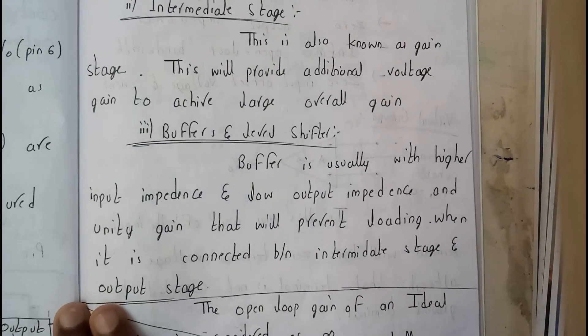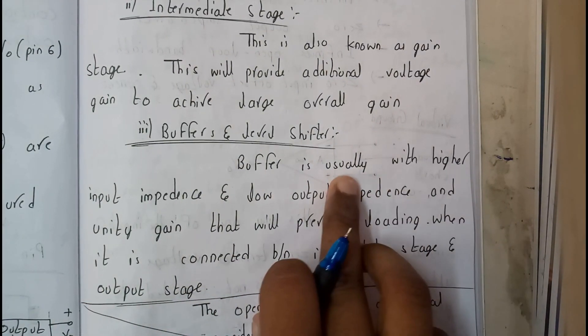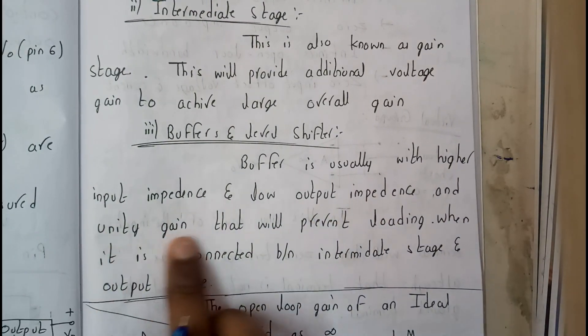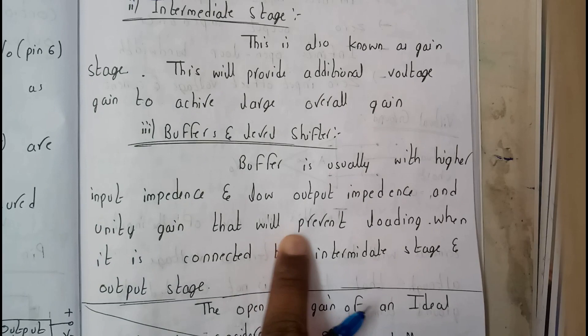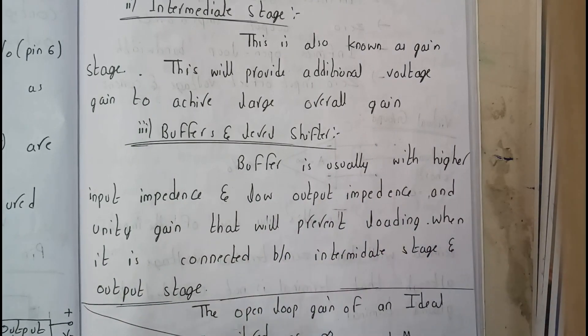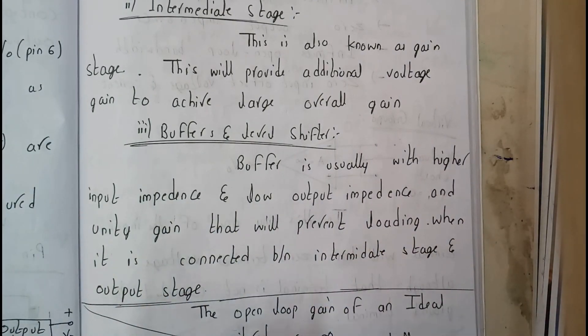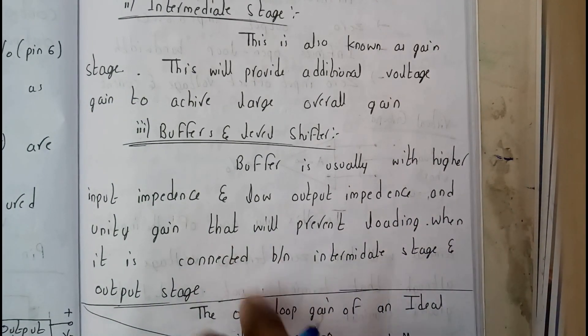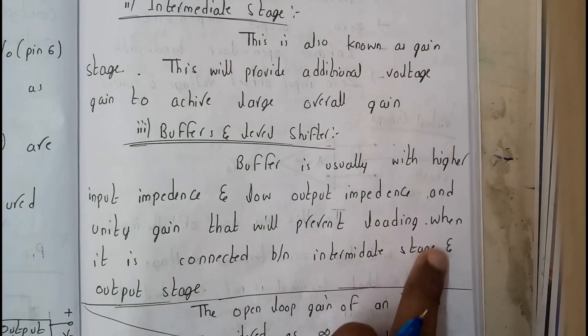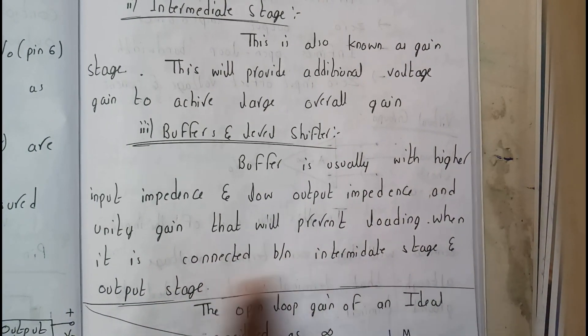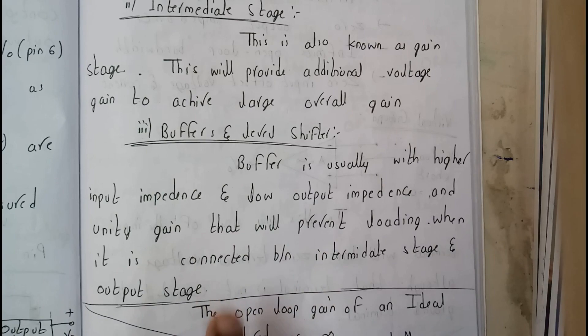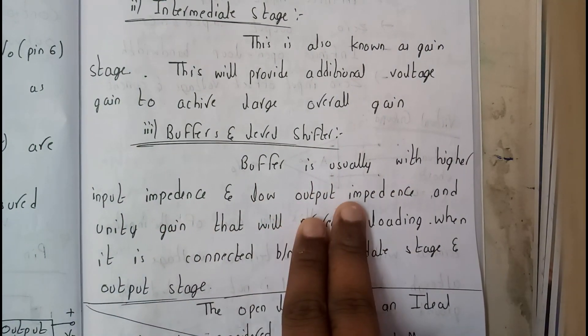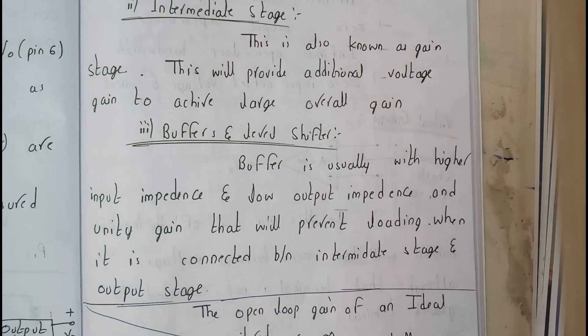So now the buffer and level shifter. Buffer is usually with higher input impedance and lower output impedance and unity gain. Unity gain means that gain is 1 guys. That will prevent the loading. So the main goal of this is to avoid that loading process, because once I give the input we should get the output, it should be a bit fast, so that it will be more efficient when it is connected between the intermediate state and the output state.